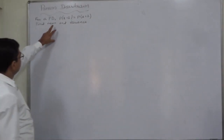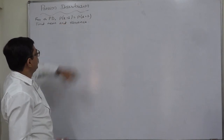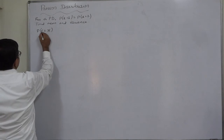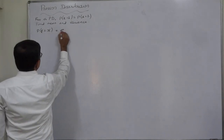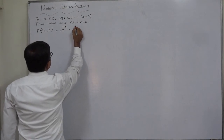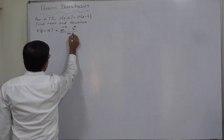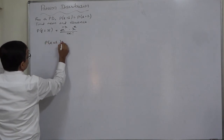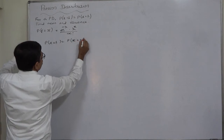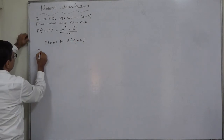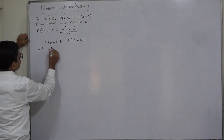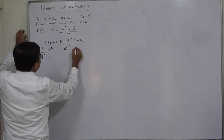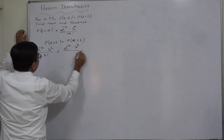It is given that the distribution is Poisson and P(1) equals P(2). In case of Poisson distribution, the probability of x equals e raised to minus mean, into mean raised to x, upon x factorial. Substituting: e^(-λ) * λ^1 / 1! equals e^(-λ) * λ^2 / 2!.